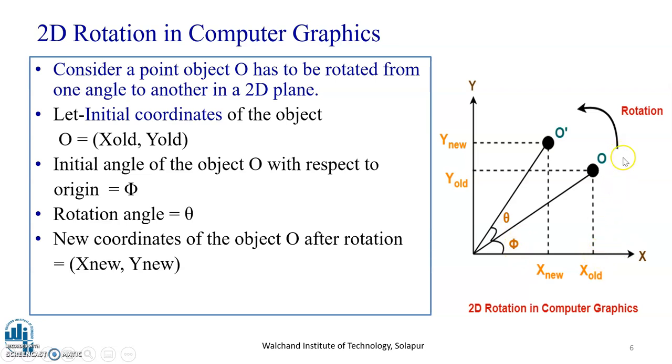This is to be rotated by a given angle theta. Let the initial coordinate of the object O be X-old and Y-old. The initial angle of the object O with respect to the origin is equal to phi. This object point O is to be rotated by an angle theta. So this point O, after rotating, becomes O dash, and the new coordinates of the object O after rotation becomes X-new and Y-new.